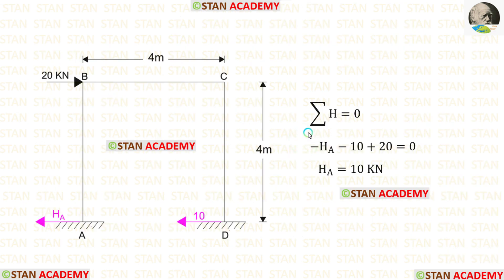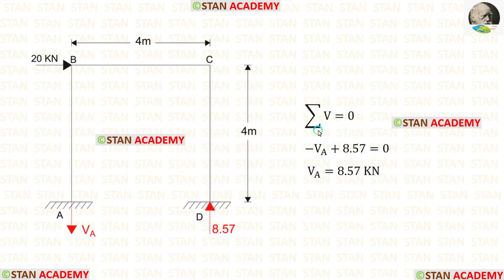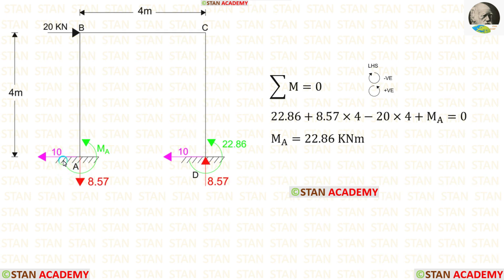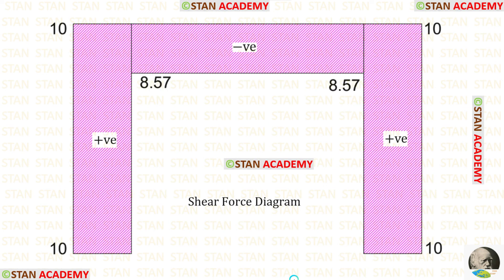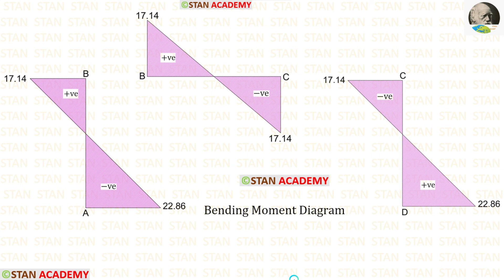Applying Sigma H = 0, we find HA. Applying Sigma V = 0, we find VA. Assuming MA acts in the anti-clockwise direction and taking moments about A, we get a positive value, so our assumption is correct. Then we make the free body diagram to easily draw the shear force and bending moment diagrams. Here you can see the shear force diagram and the bending moment diagram. We are now ending this session. Thank you for watching. Bye-bye.